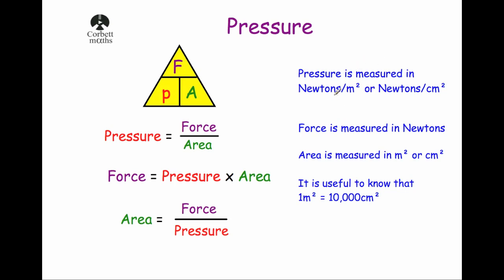Pressure is measured in newtons per meter squared or newtons per centimeter squared, depending on the context of the question. The force will be measured in newtons, and the area is usually measured in meters squared or centimeters squared. It's also useful to know that one meter squared is equal to 10,000 centimeters squared, as we'll often have to convert between the two.